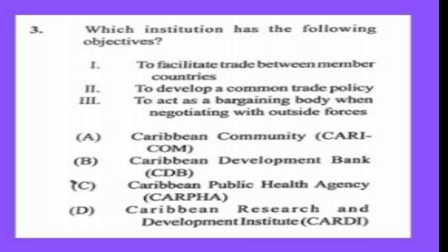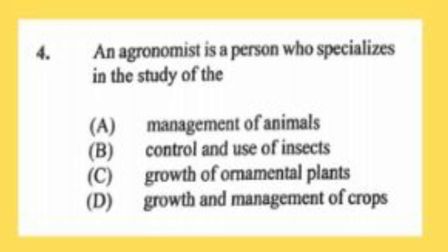Question number three: which institution has the following objectives — to facilitate trade between member countries, to develop a common trade policy, to act as a bargaining body when negotiating with outside forces? A) Caribbean Community, B) Caribbean Development Bank, C) Caribbean Public Health Agency, D) Caribbean Research and Development Institute. The answer is A, Caribbean Community, referred to as CARICOM.